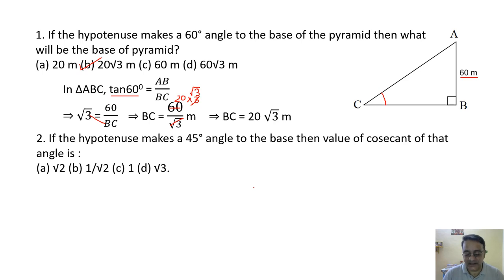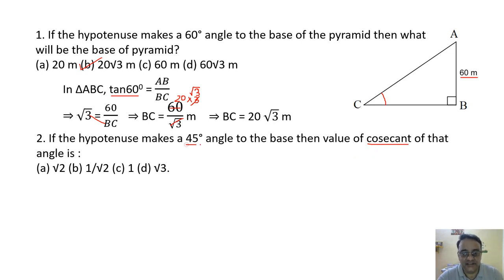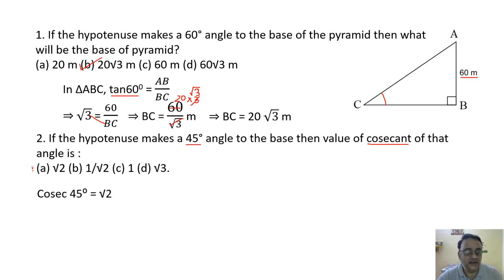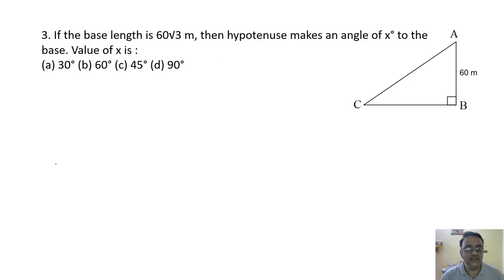Question 2: If the hypotenuse makes 45° to the base, find cosec of that angle. cosec 45° = √2. The correct option is option A.